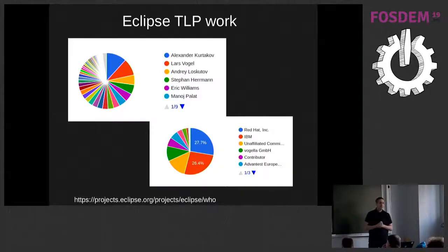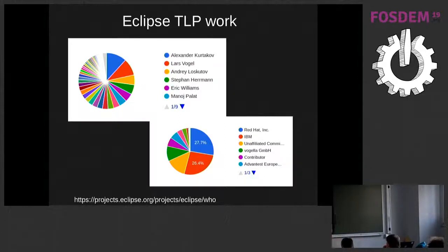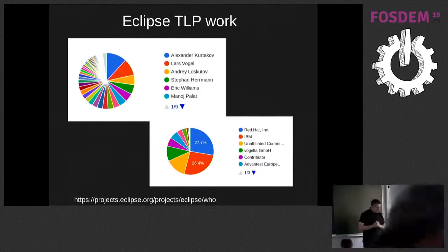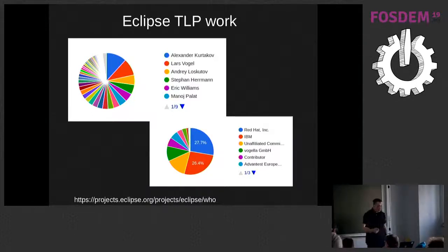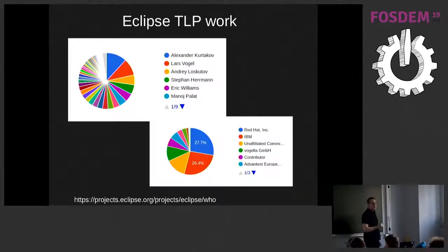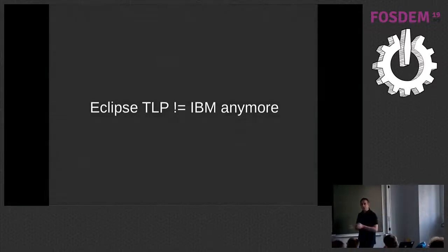If you look at the individual contributor statistics, we have a few people like Alexander who do a lot of work, but we also have a lot of people delivering very small patches. That wide area in the graph is not a graphical error — it's just a lot of people providing one or two patches, bringing Eclipse forward, maybe fixing a bug that was annoying for them. Looking at companies involved, we have Reddit, IBM, Vogela GmbH, but also a lot of people not associated with a membership company. Unaffiliated contributors make up about 40% of the project.